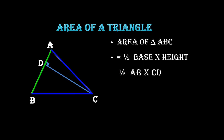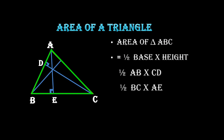We can take another pair: when BC is the base, we draw the perpendicular from the opposite vertex A to BC, giving height AE. Similarly, when AC is the base, the perpendicular drawn from the opposite vertex B is the height. So in any triangle, we get three pairs of base and height.